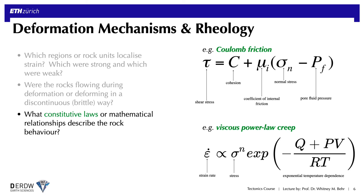The equation on the lower right describes ductile or viscous deformation and relates the strain rate — which is a measure of how fast the rock deforms over a given thickness — to the stress, and to an Arrhenius term that expresses the temperature and pressure dependence of the creep law.